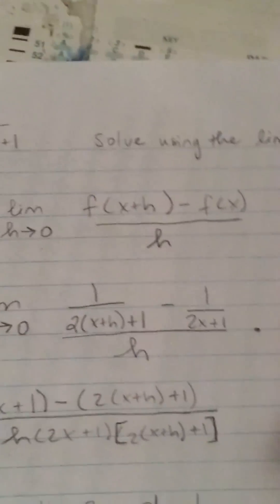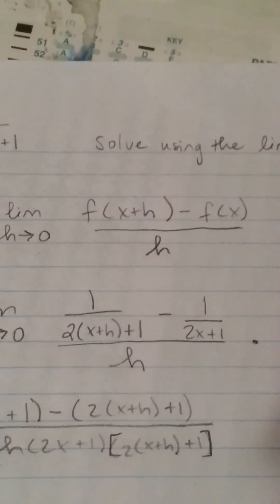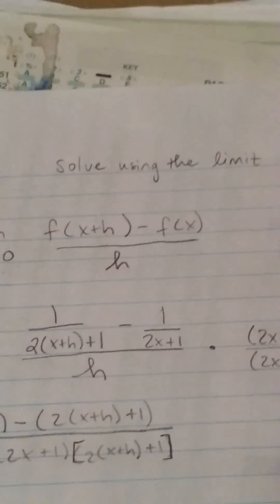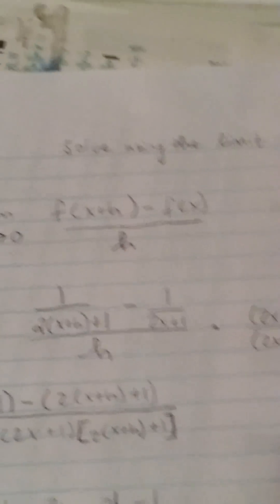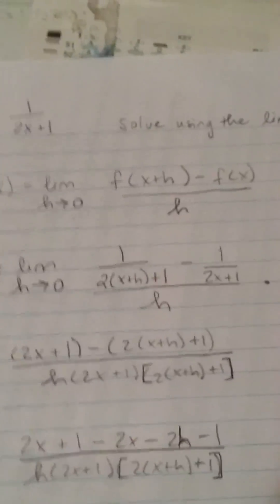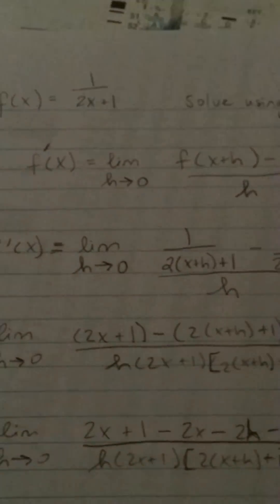We're trying to solve this problem using the limit process. We've got to use this formula: f of x plus h minus our original f of x, all over h. So when we plug our problem into this equation,